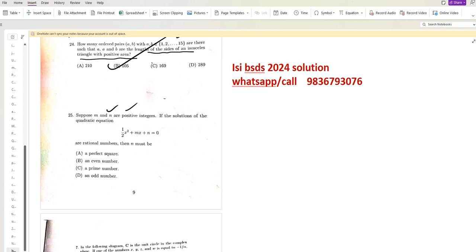Suppose that a and n are positive integers. If the solutions of the quadratic equation are rational numbers, then what must n be? It must be a perfect square.